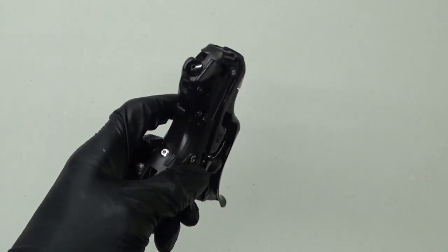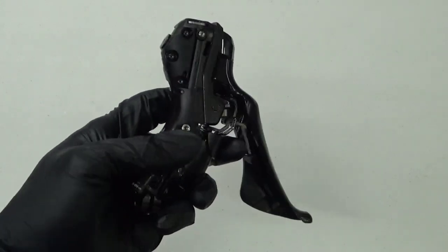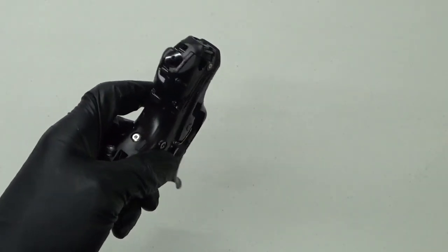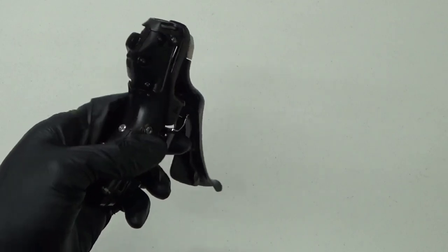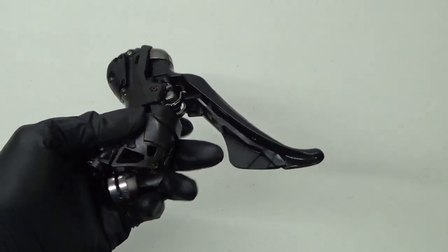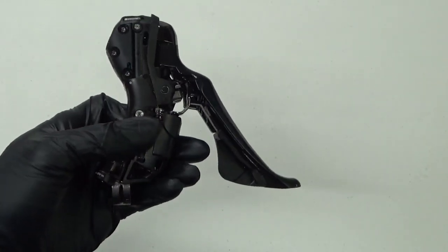Here we have a lever. This just happens to be an Ultegra hydraulic lever R8020, but it doesn't matter - it could be a 105 R7000 version or the Dura-Ace version, a hydraulic lever.